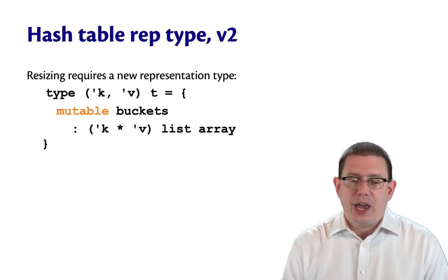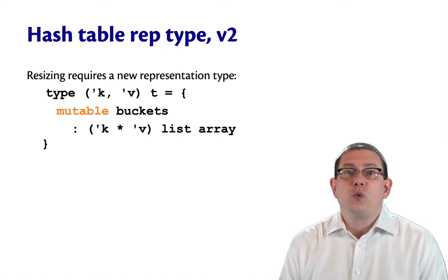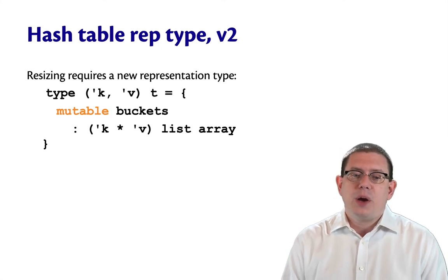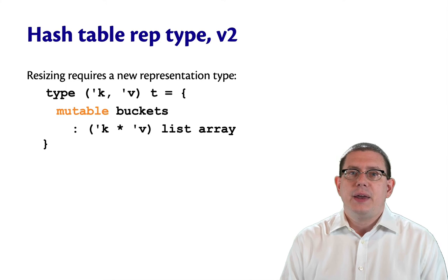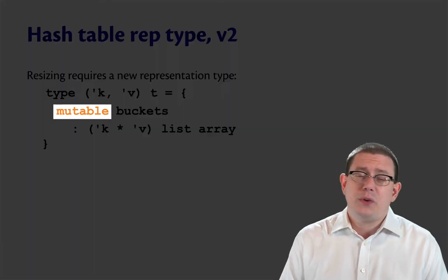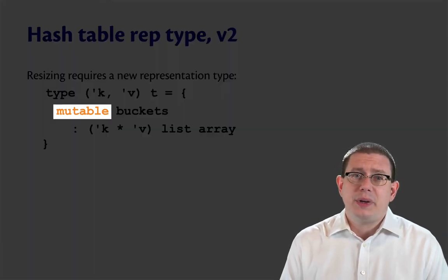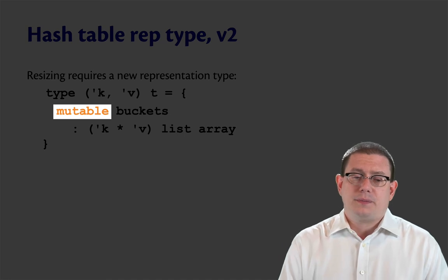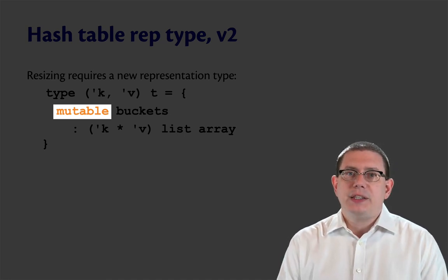So here's our new representation type. I've put it inside of a record at this point, because what I want to do is make the array mutable. I could also have used a ref. It doesn't matter much, but it's going to be convenient to have a record later on.